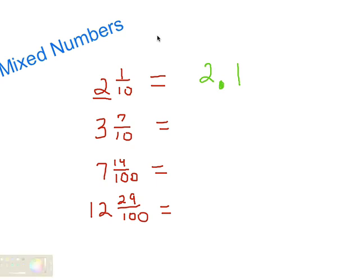Let's see how you do on the next one. We know that seven-tenths written as a decimal is 0.7. Now we need to write the whole number in there. You'll get to the point where you can write these together fairly quickly. Anytime the fraction is over ten, we can put the whole number, then a decimal point, and then whatever the numerator is in the tenths place — so three and seven-tenths becomes 3.7.